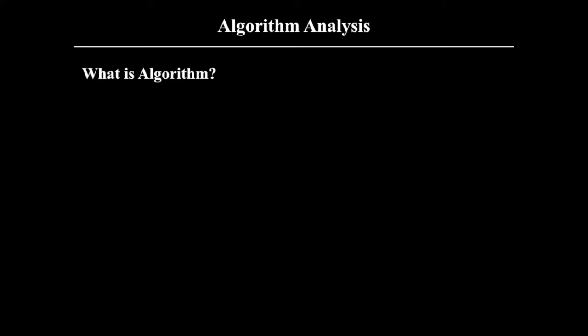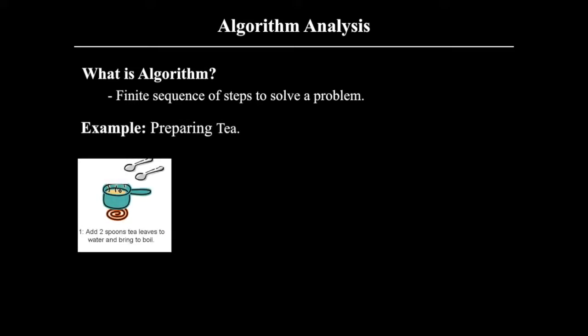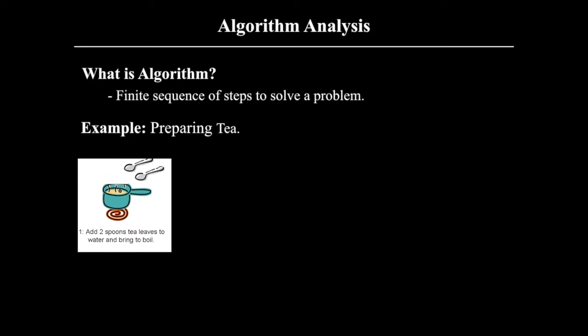Now let's start from the basics. First of all, we need to understand what is an algorithm. An algorithm is a finite sequence of steps, or a finite sequence of instructions, to solve a particular problem. For example, here I am giving you a problem to prepare tea. In order to prepare tea, the first step is to take a pan, then add some amount of water and tea leaves, and bring it to boil.